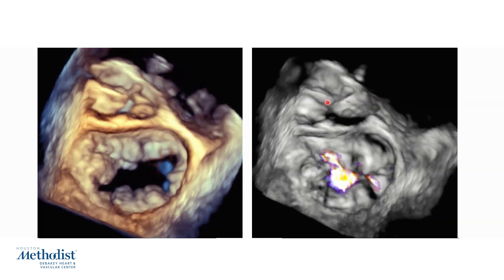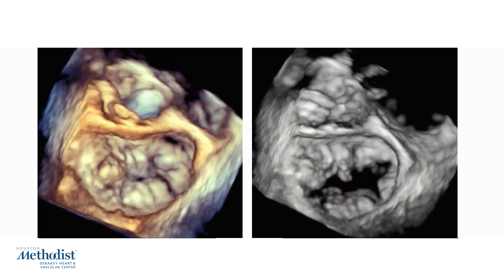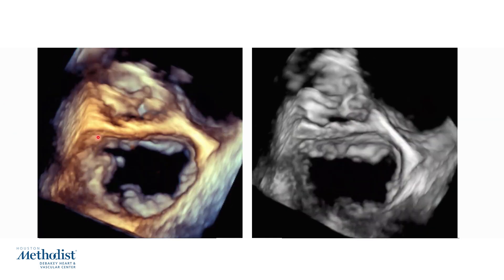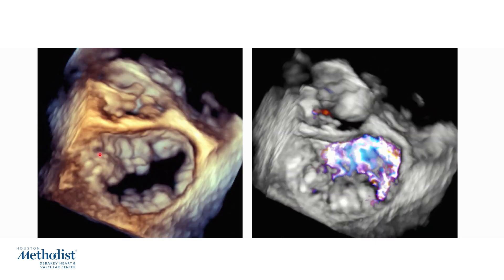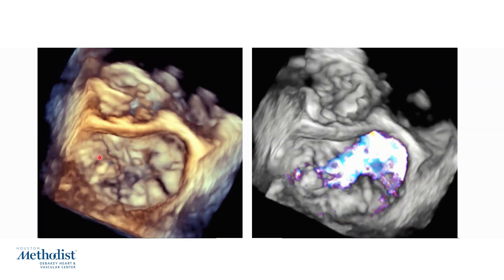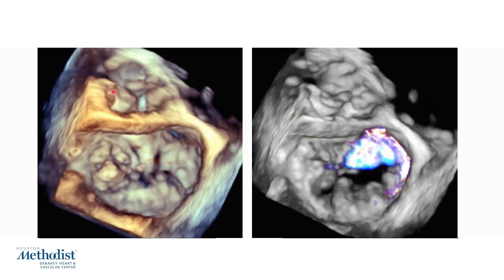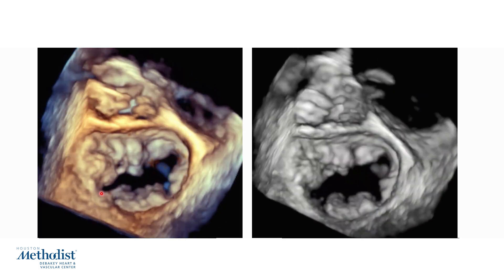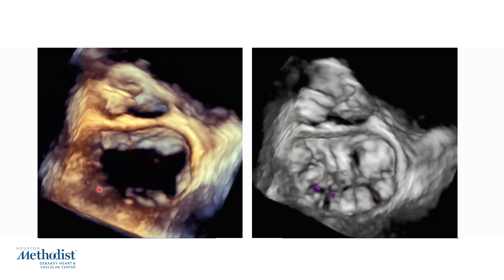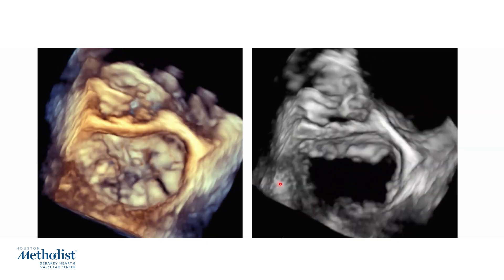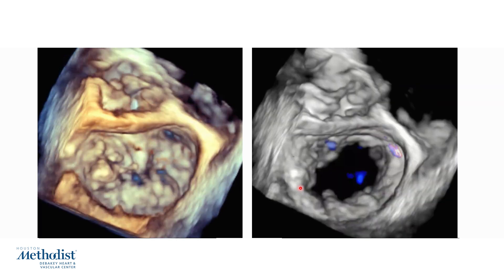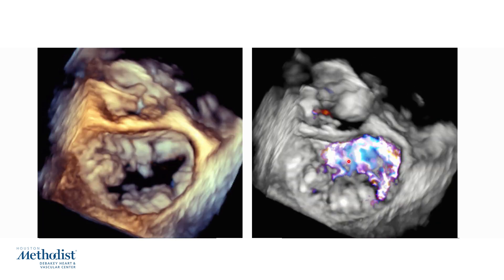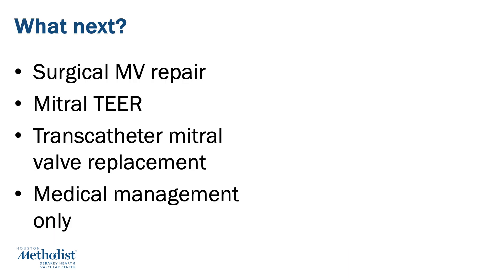Here are the corresponding 3D images with and without color. You can appreciate on this 3D en-face view that there are multiple prolapsing scallops in this mitral valve, and the flail segment is in the lateral aspect, which is the P1 scallop. The aortic valve is at 12 o'clock, with the anterior leaflet, posterior leaflet, and the interatrial septum visible. You can see the mitral regurgitation on the color 3D image originating underneath the P1 scallop, fanning from posterior to anterior and from the lateral to the medial aspect of the valve — extremely severe mitral regurgitation responsible for this patient's symptoms.